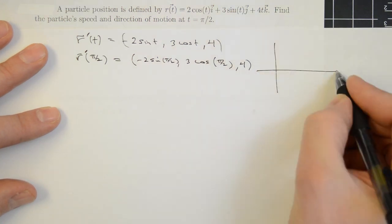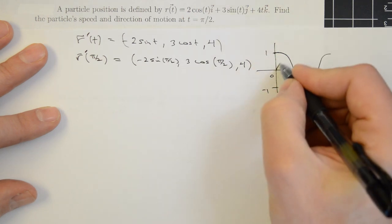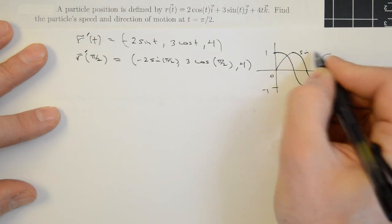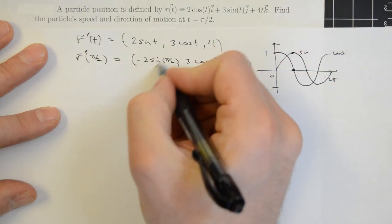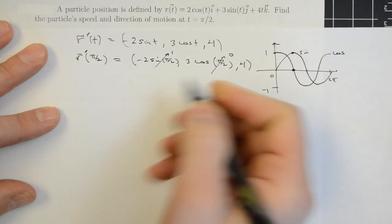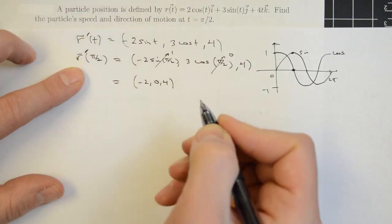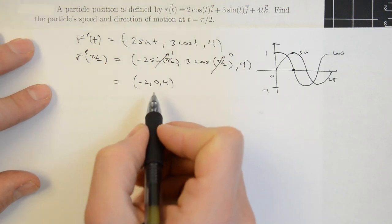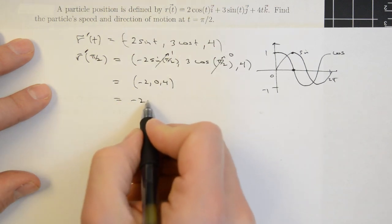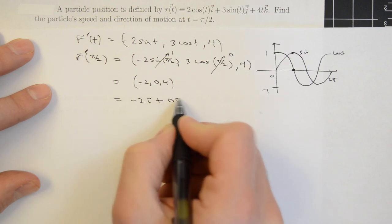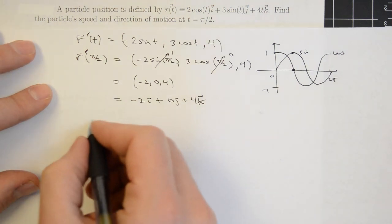To evaluate, we recall that the cosine function goes between 1 and negative 1 over one period, and the sine function similarly. At t = π/2, the sine value is 1 and the cosine value is 0. So the velocity vector at π/2 is minus 2, 0, 4 — written as minus 2i plus 0j plus 4k. This vector can be split into a magnitude and a direction.